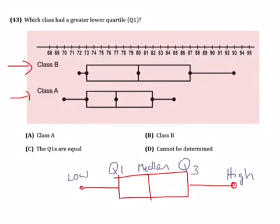So if we're looking at just the quartile 1s, right here is class B's quartile 1. It looks like they're at 73. And right here is class A's quartile 1. It looks like they are also at 73.